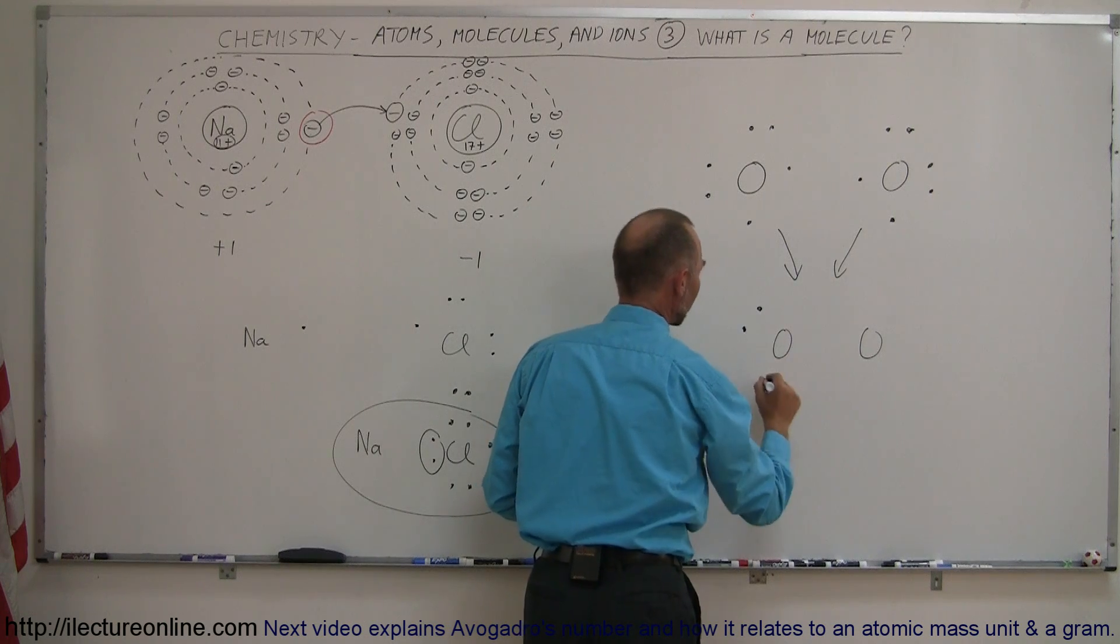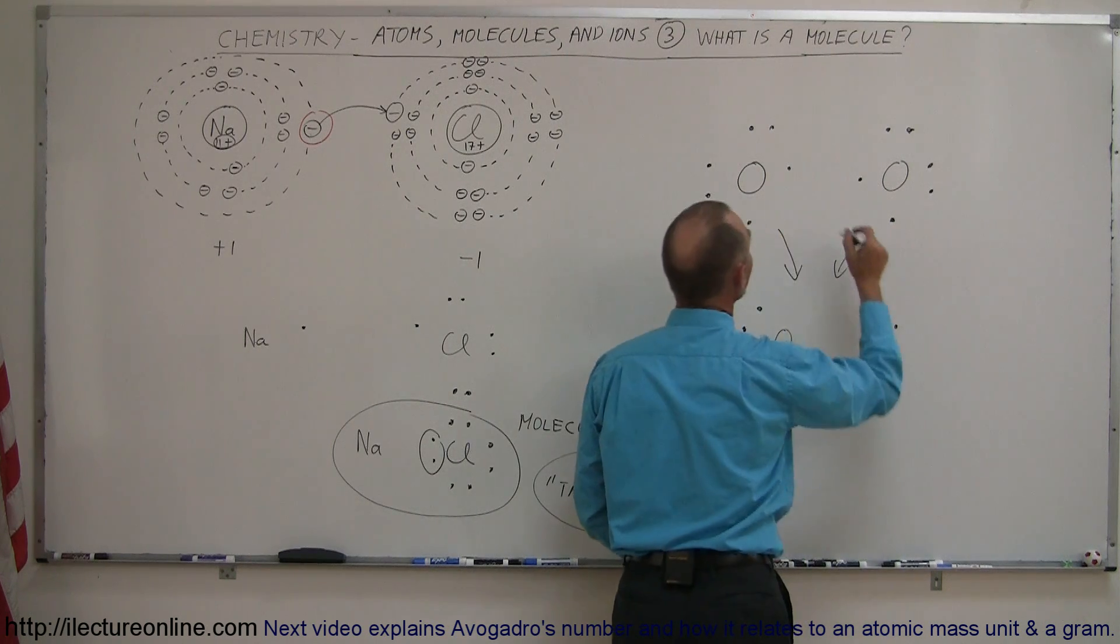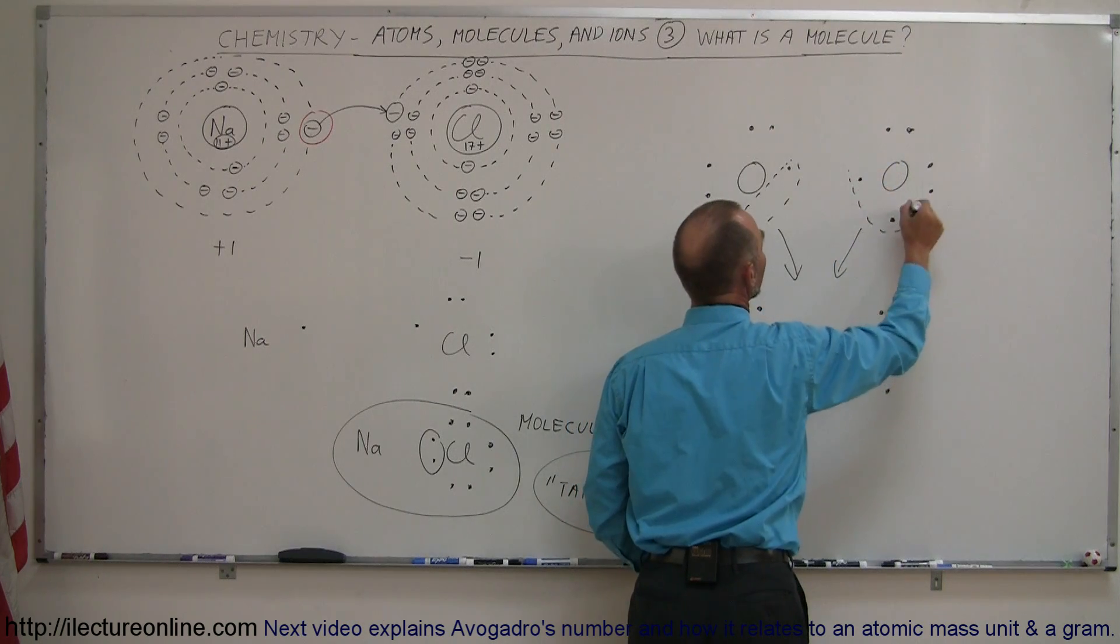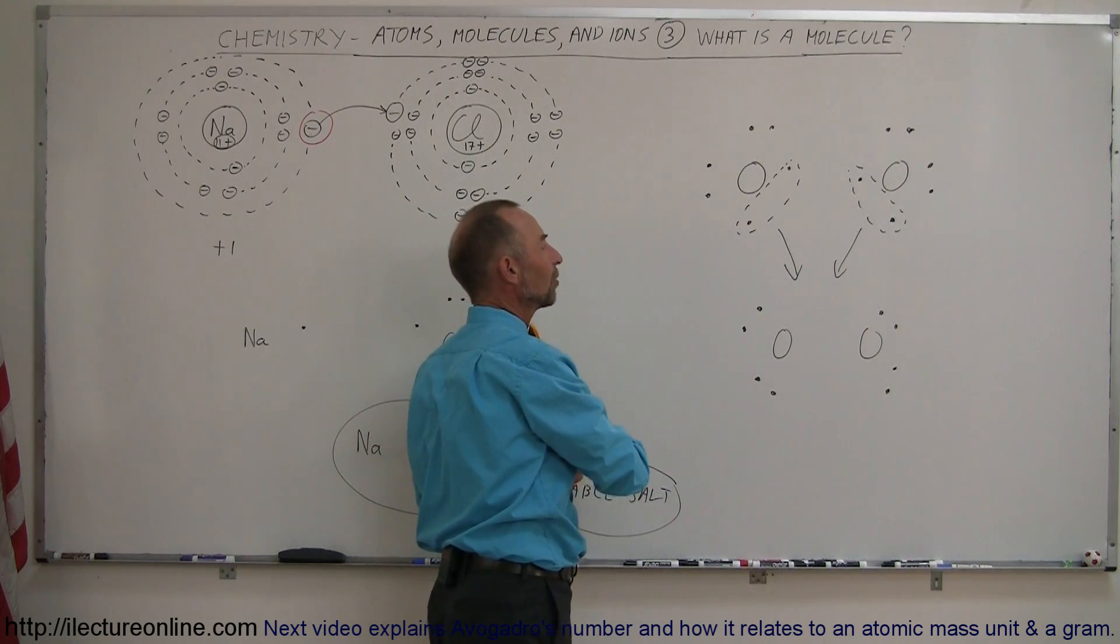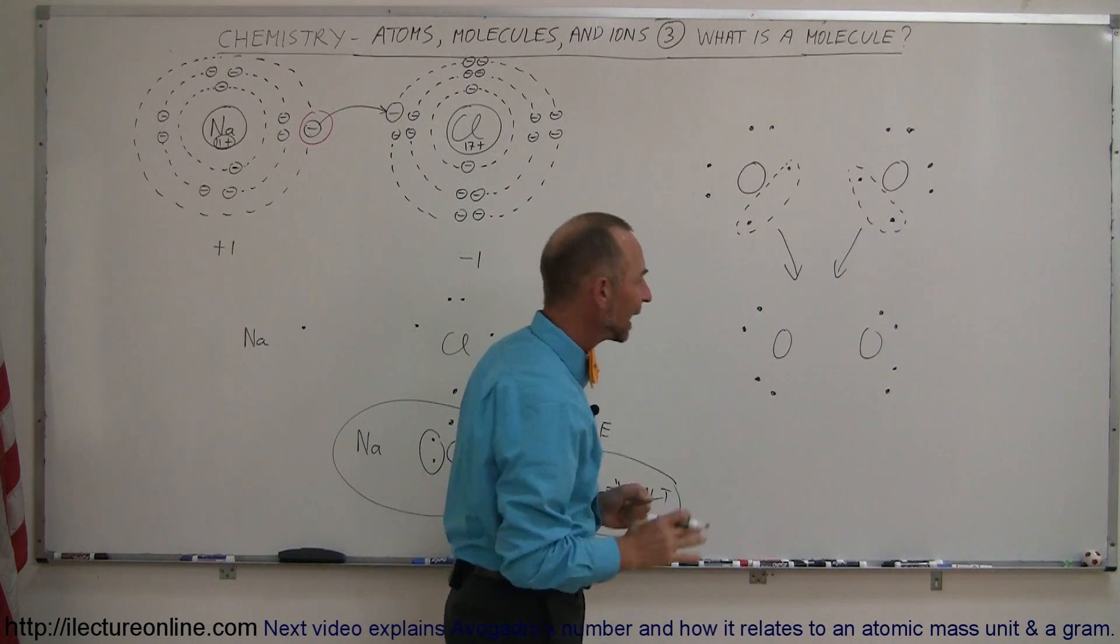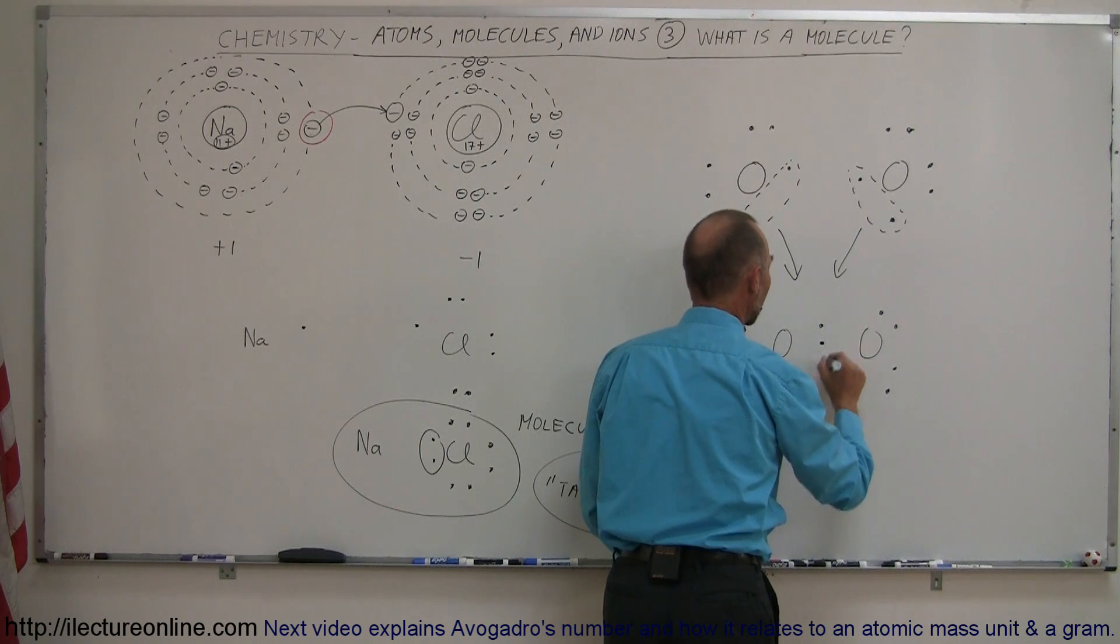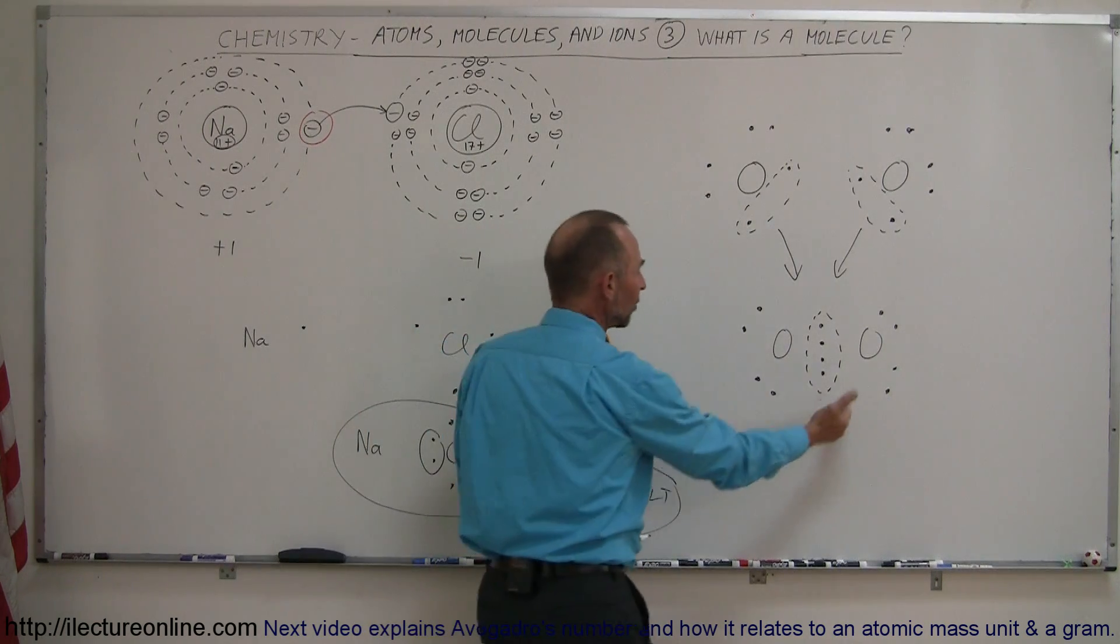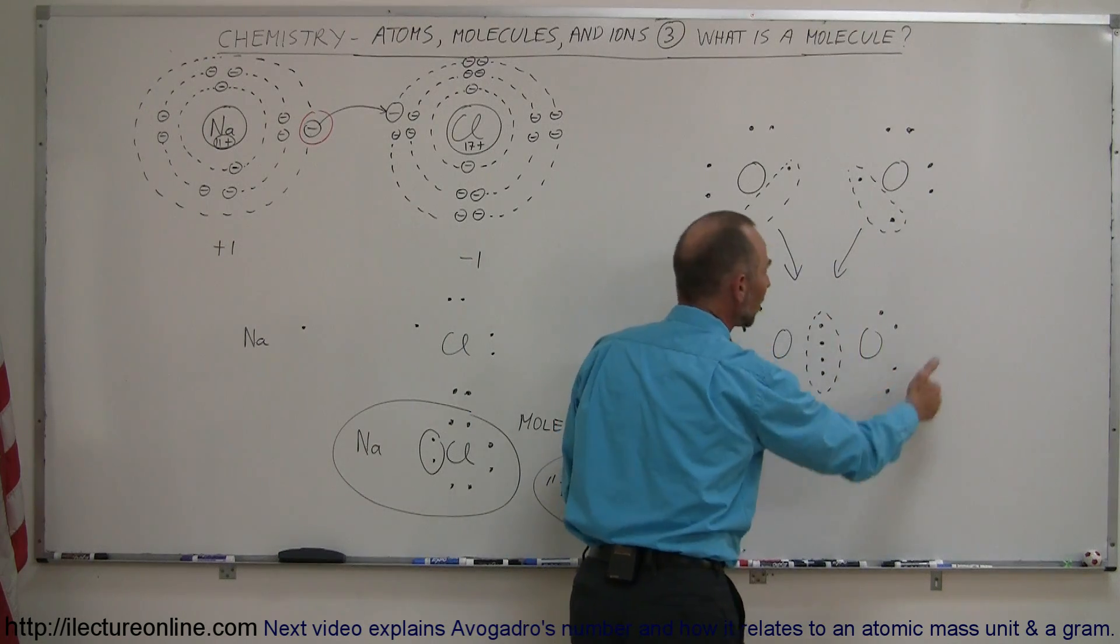So what happens then is the two oxygen atoms come together, they still each account for four electrons, like so, and then they take these two right here, and these two right here, and share them kind of like 50-50, 50% of the time they belong to one of the oxygen atoms, 50% of the time they belong to the other oxygen atom. But in actuality what happens then is those four electrons become four shared electrons between the two oxygen atoms, and so part of the time this oxygen atom will have eight, part of the time this oxygen atom will have eight electrons, and they're both happy.